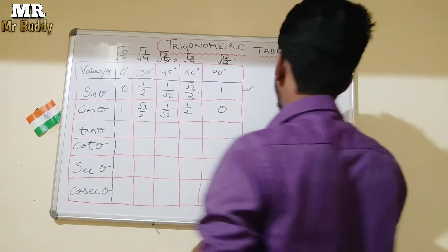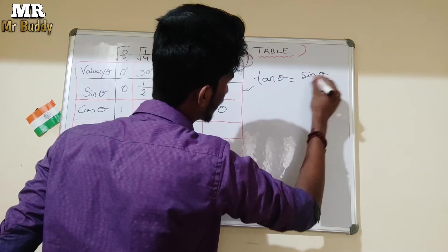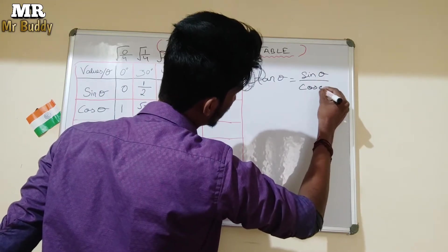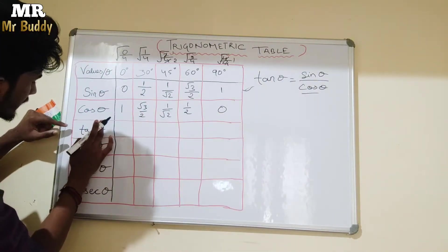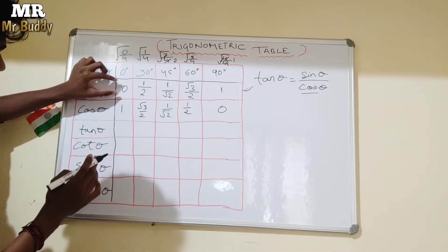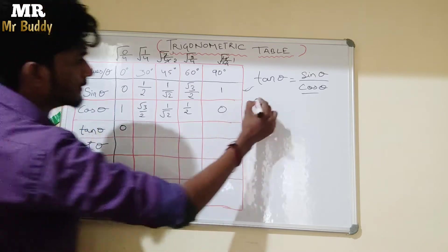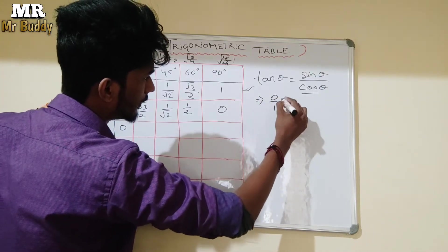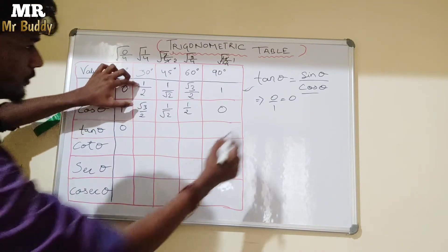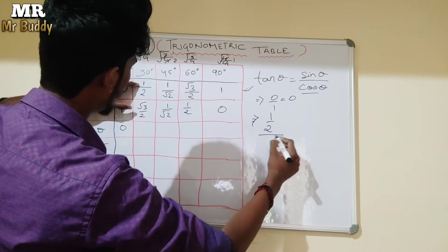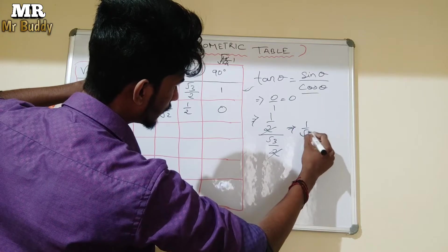What is tanθ? Tanθ is equal to sinθ divided by cosθ. So, to find tanθ values, we divide sinθ by cosθ. For tan 0°: sin 0° is 0, divided by 1 = 0. For tan 30°: 1/2 divided by √3/2 — that is 1 upon √3.